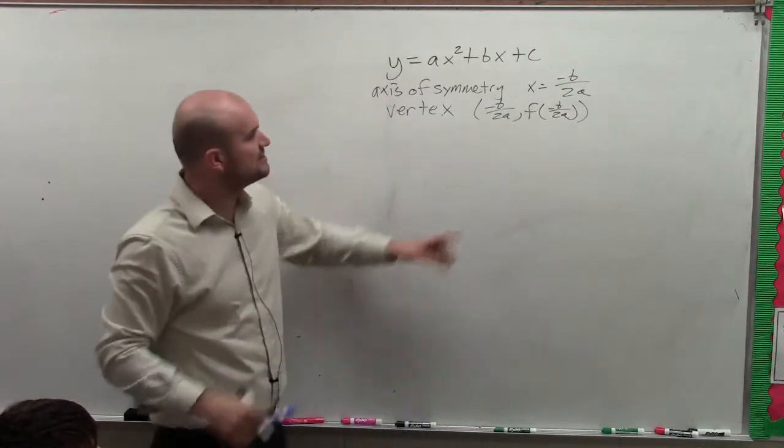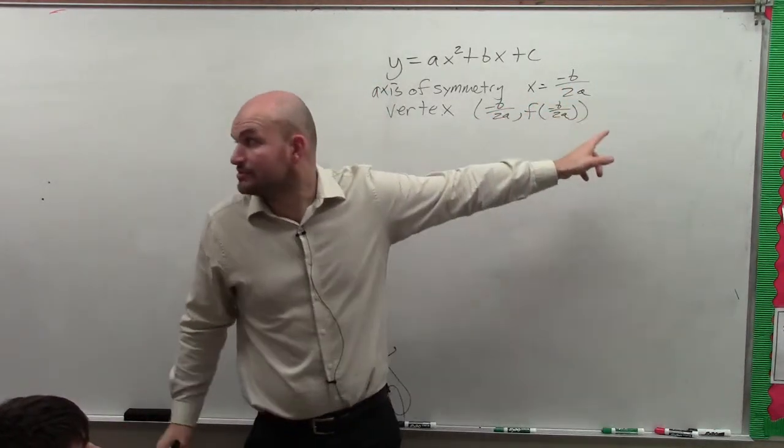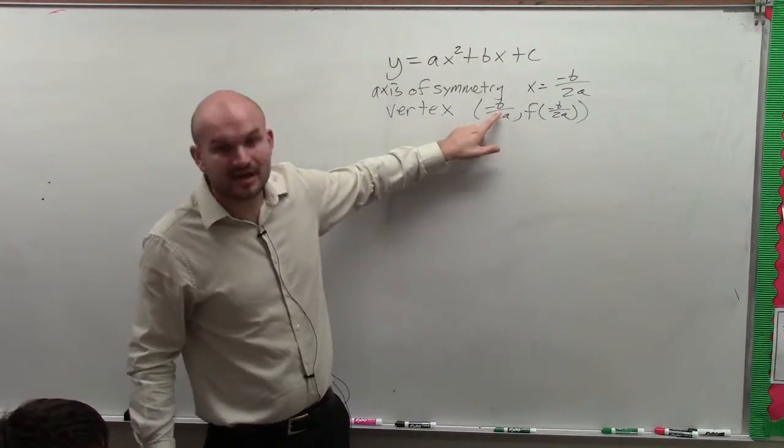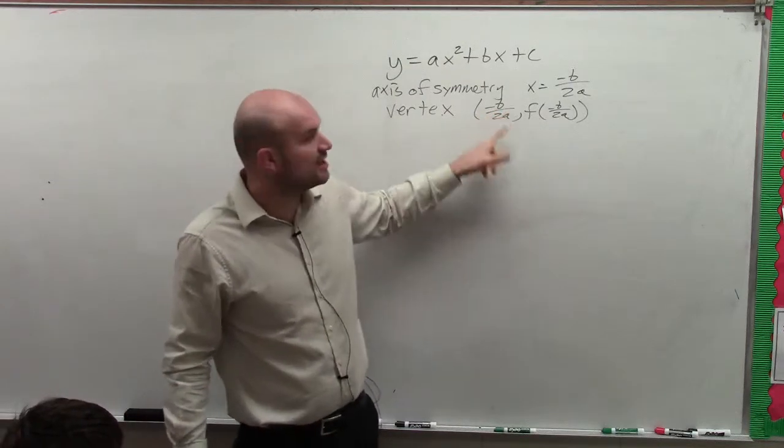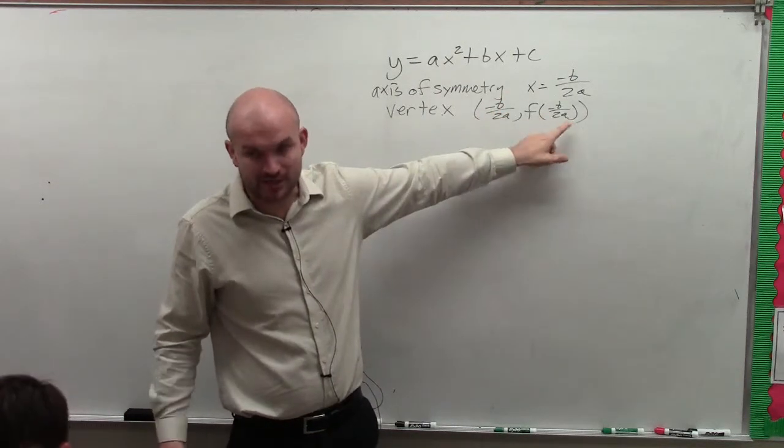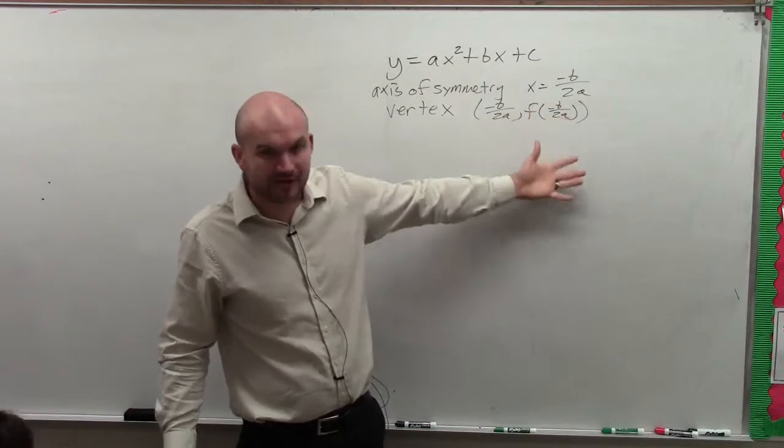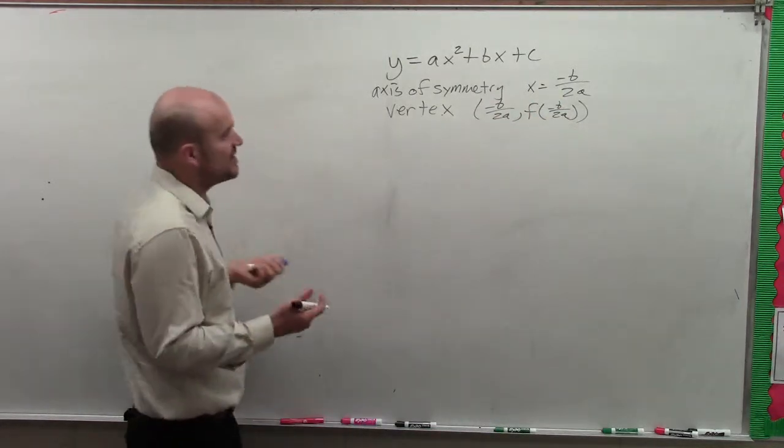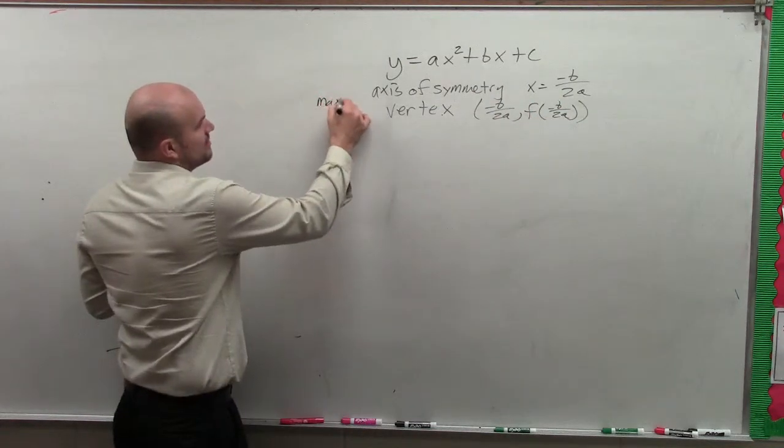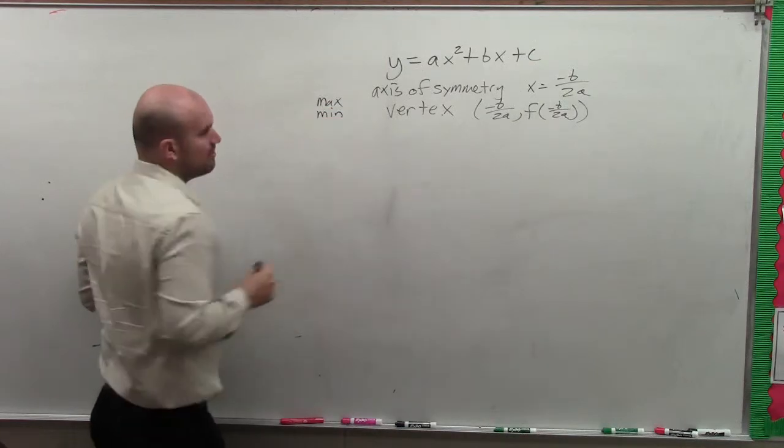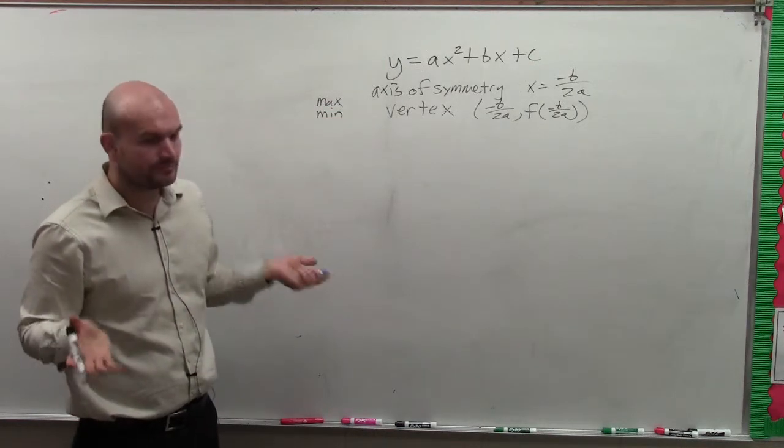And basically, remember what that meant is, you took whatever the axis of symmetry was, then that was your x-coordinate of your vertex, then you plugged that value back into your equation or your function to find the y-value of your vertex. And remember, your vertex was your maximum point or your minimum point.